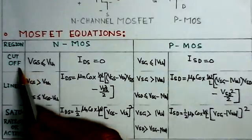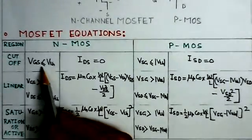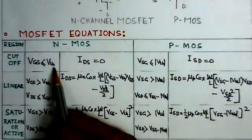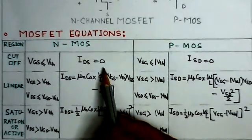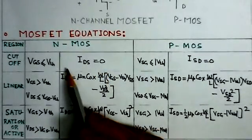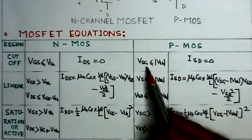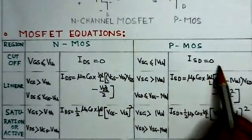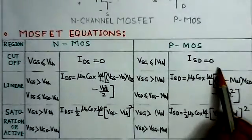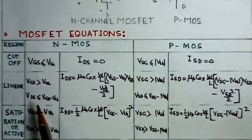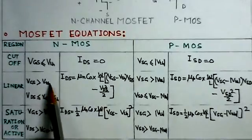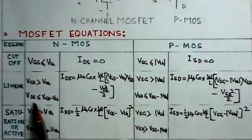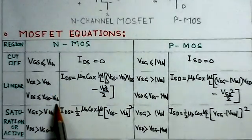So we can see here, for cut-off, VGS less than V-threshold, IDS is 0. That is a cut-off for the N-MOS. VGS less than magnitude of V-threshold and ISD equals to 0. This is the cut-off region.